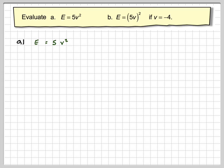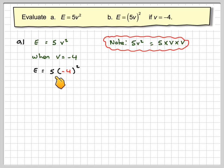So take the first case, we've got E = 5V squared. We should note that 5V squared means 5 times V times V. When V is minus 4, we get 5 times (minus 4) squared. Now, when you substitute your numbers in, you should substitute in with brackets.